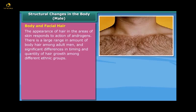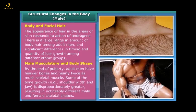There is a large range in the amount of body hair among adult men, with significant differences in timing and quantity of hair growth among different ethnic groups. Male musculature and body shape: by the end of puberty, adult men have heavier bones and nearly twice as much skeletal muscle. Some bone growth — such as shoulder width and jaw — is disproportionately greater, resulting in noticeably different male and female skeletal shapes.